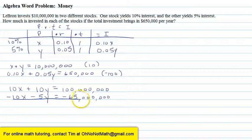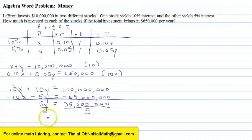So now, let me add the equations together. 10X plus negative 10X is 0. That drops out. 10Y minus 5Y is 5Y. 100 million minus 65 million is 35 million. So now I want to solve for Y. So I divide both sides by 5. And I have Y equals 7 million.